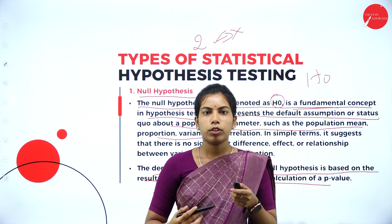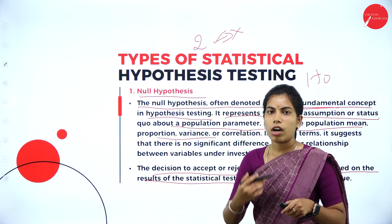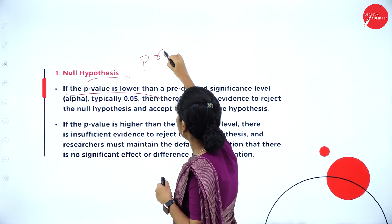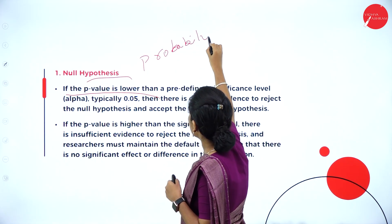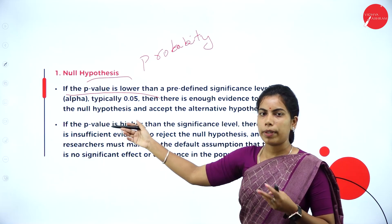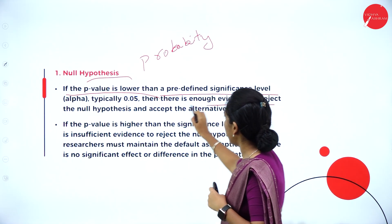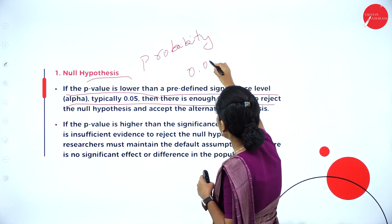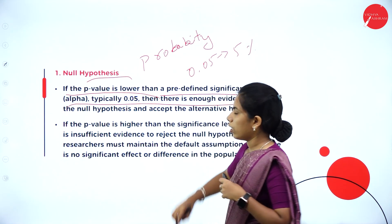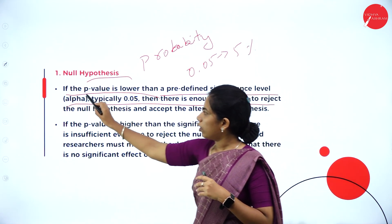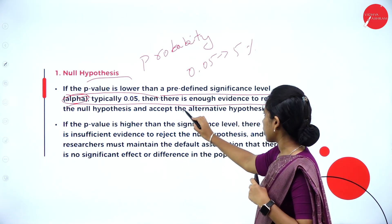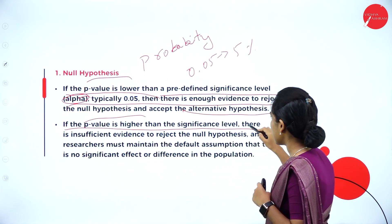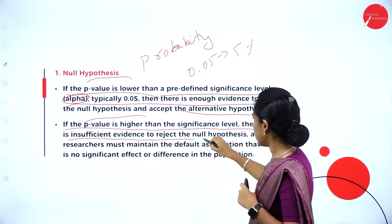To accept or reject the null hypothesis, we test it again. If the p-value — which is the probability value — is less than the predefined significance level, typically 0.05 (5% probability, denoted by the Greek letter alpha), we reject the null hypothesis in favor of the alternative. If the p-value is higher than the significance level, there is insufficient evidence to reject the null hypothesis.